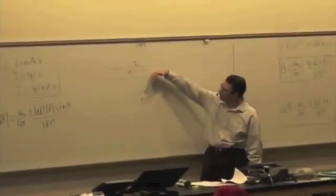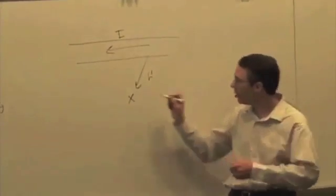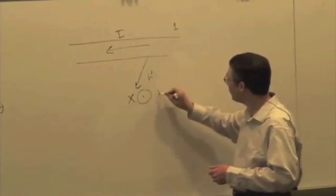Just pick a segment in there, and they're all going to be the same direction. I delta L cross R hat, thumb points out due to wire at the top. We'll call this 1. This is B1.